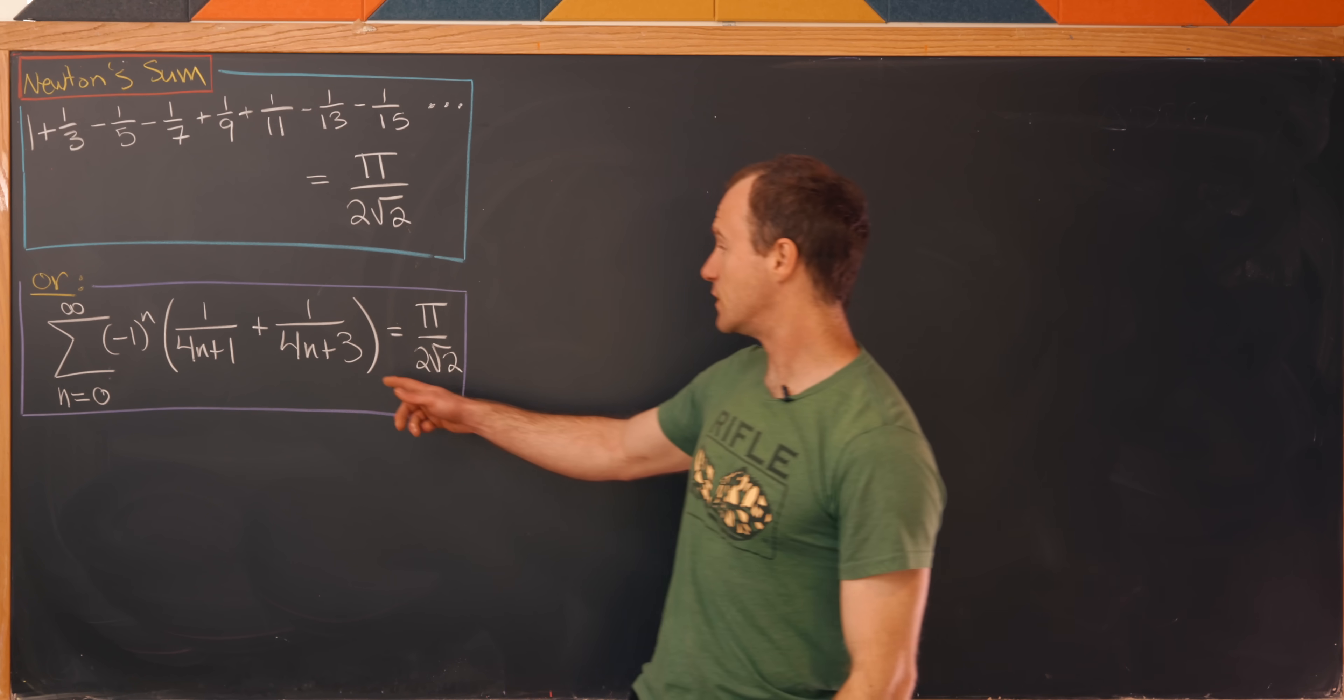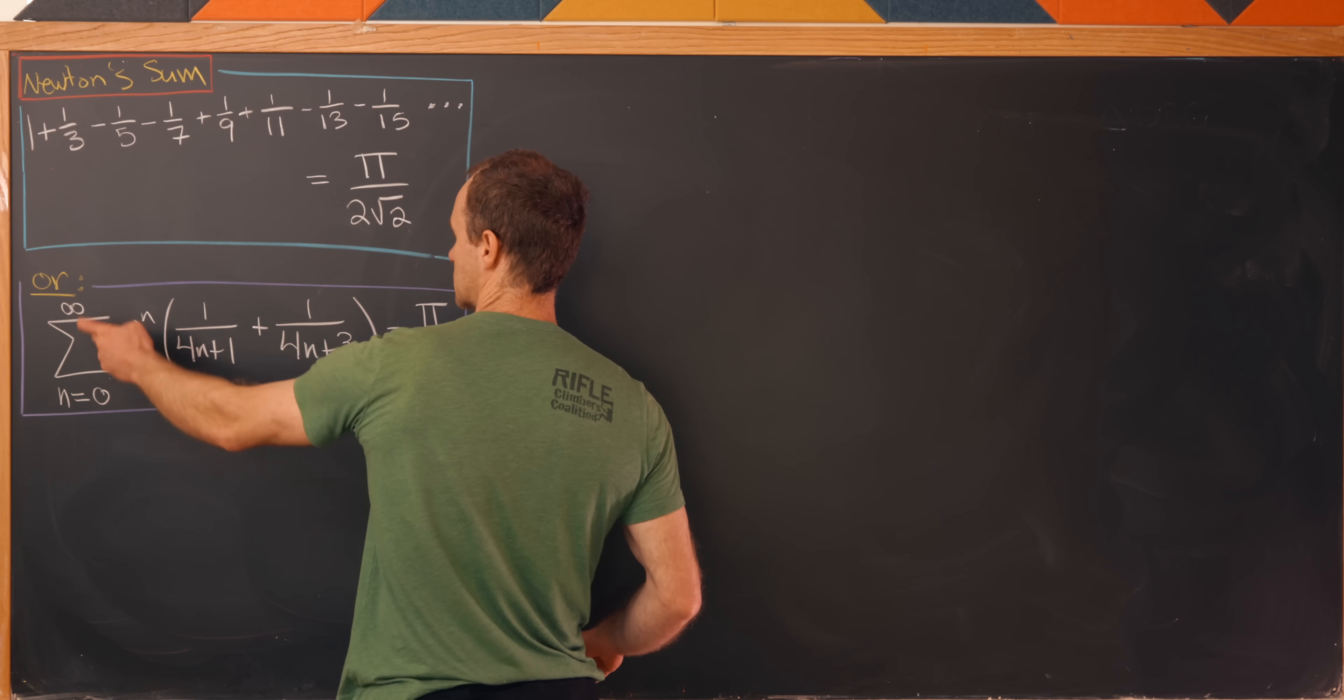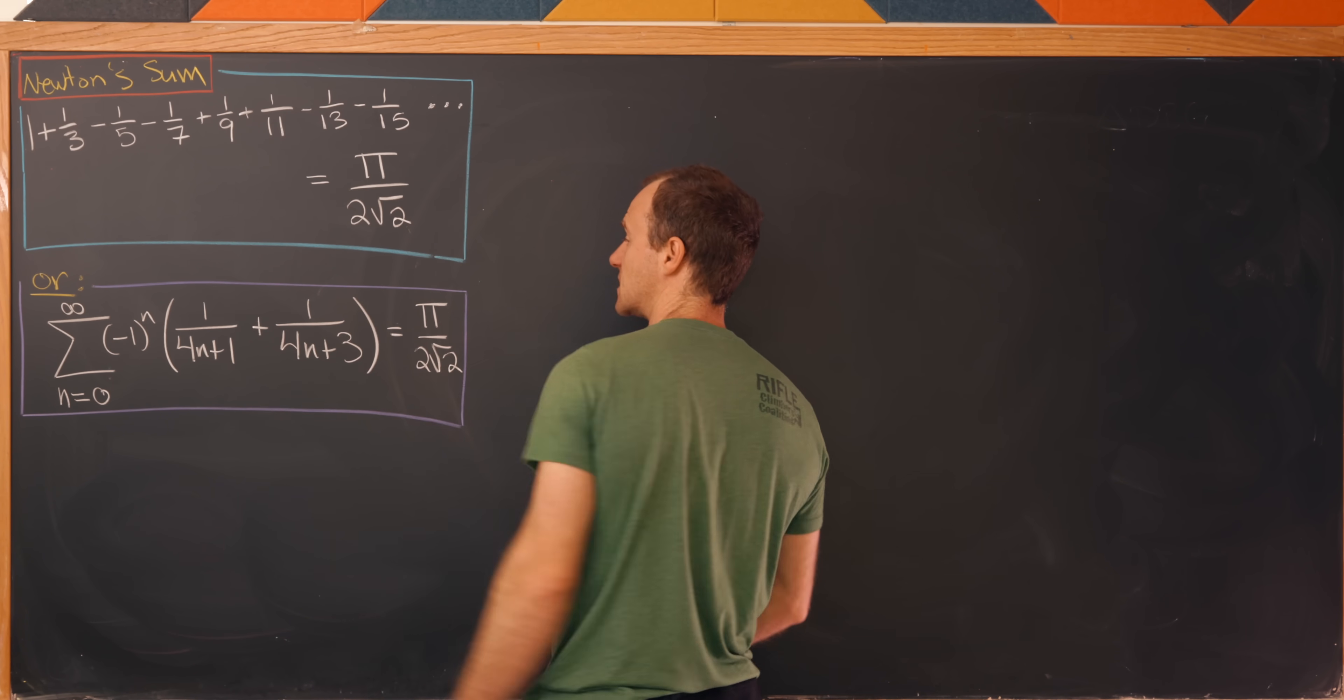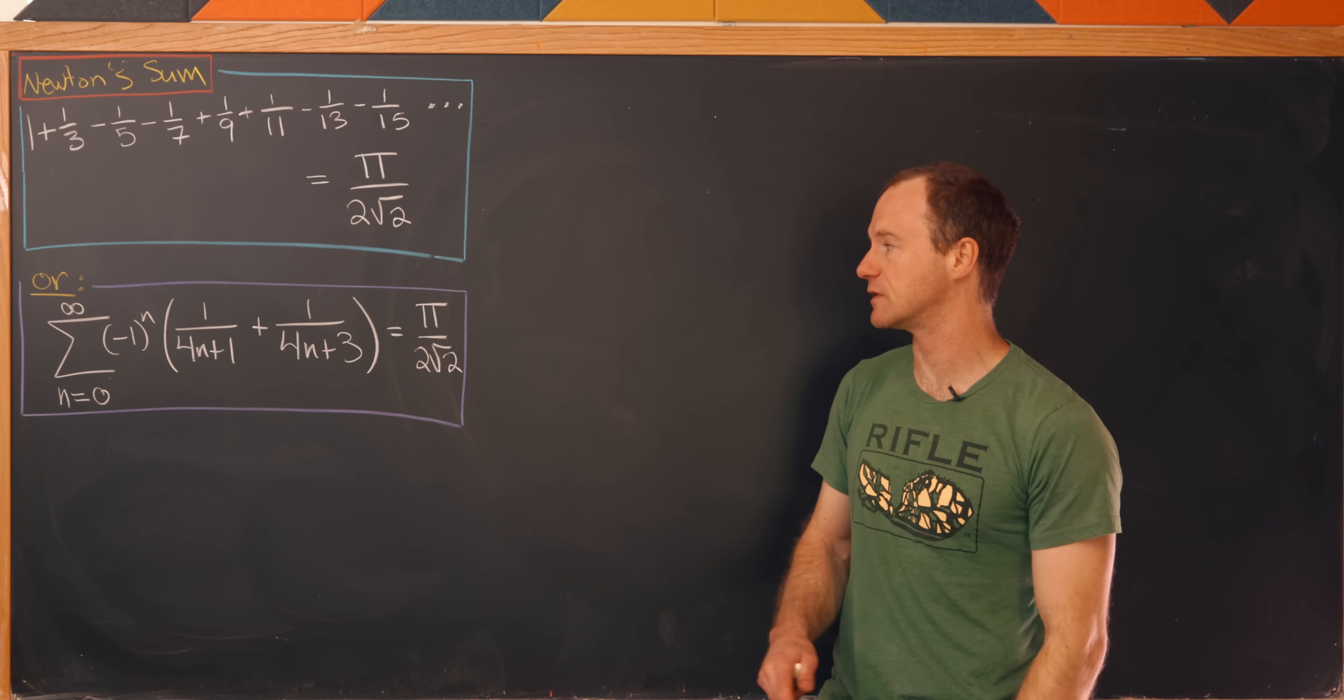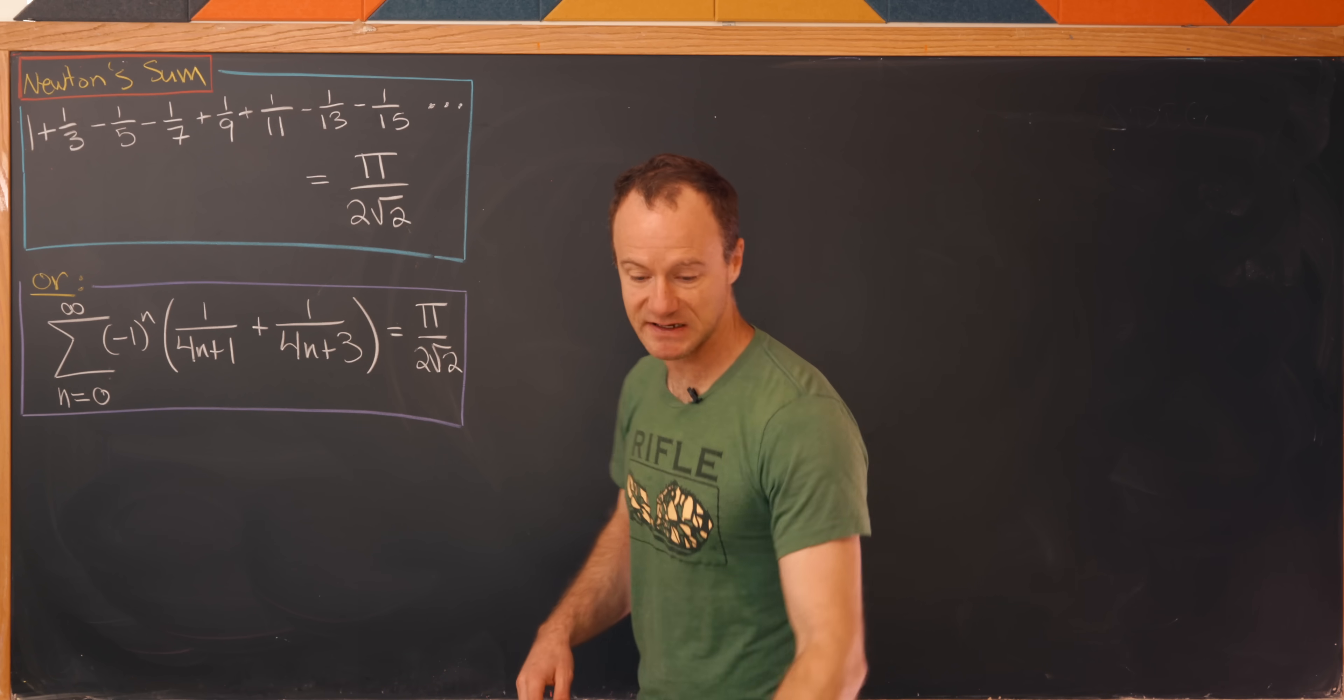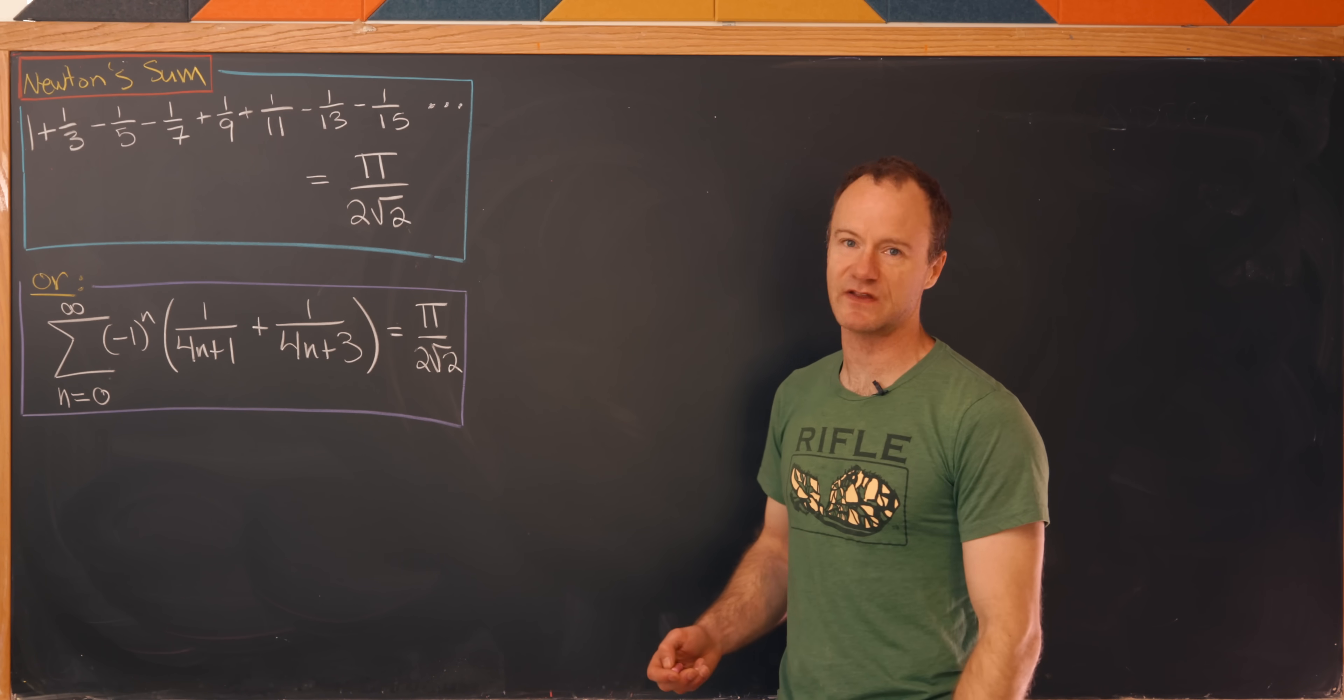In fact, we could write this left-hand side as follows. Notice we have the sum as n goes from 0 to infinity of (-1)^n, and then here we have the sum of 1/(4n+1) plus 1/(4n+3). Let's just check that to make sure it makes sense before we get on to deriving this identity.